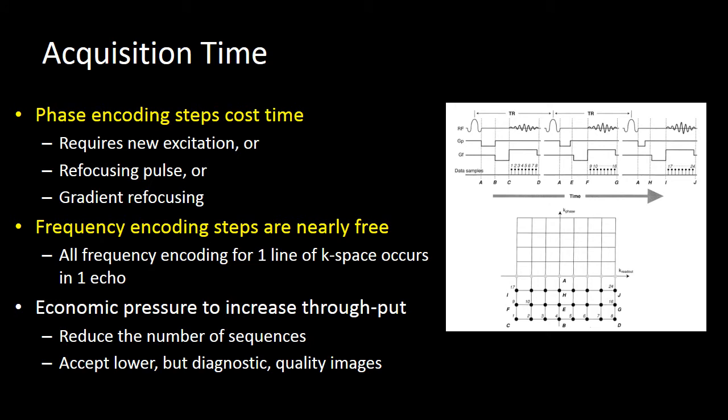Let's think about how phase-encoded steps cost time. For each line of k-space, we require a different phase gradient and therefore a separate RF pulse to create each line of k-space. Frequency-encoded steps are almost free because all we do is change either how much of an echo we sample or how rapidly we sample that echo. We can change our frequency-encoded field of view or resolution just by changing our sample rate and the time or extent that we sample the echo.